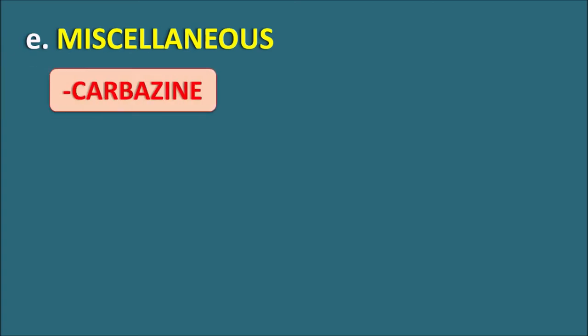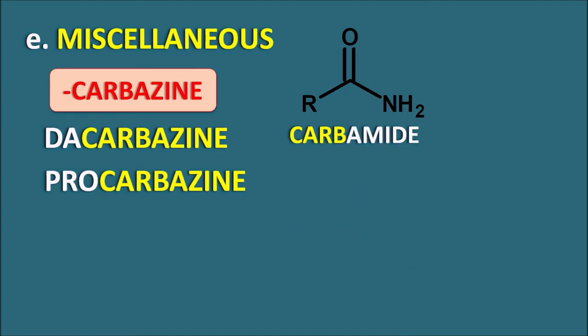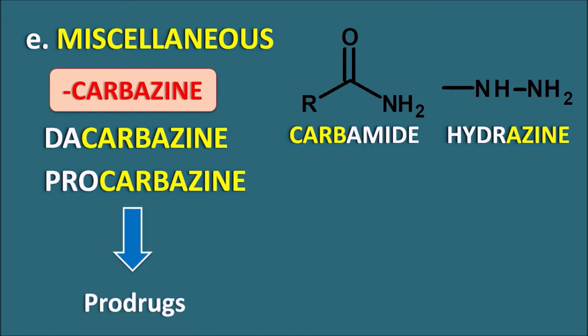The miscellaneous category within alkylating agents includes drugs with the suffix '-carbazine' — not to be confused with carbamazine. Two drugs are dacarbazine and procarbazine. The suffix '-carbazine' derives from 'carb-' (carbamide/carboxamide) and '-azine' (hydrazine), indicating amide derivatives with a hydrazine functional group. Both are prodrugs requiring bioactivation in the liver to act as alkylating agents; procarbazine also inhibits DNA and RNA synthesis.